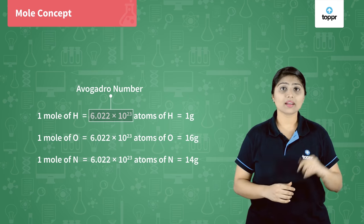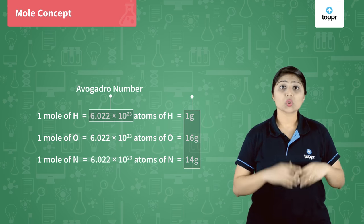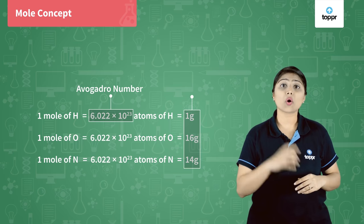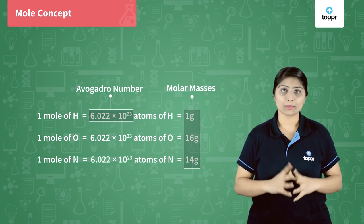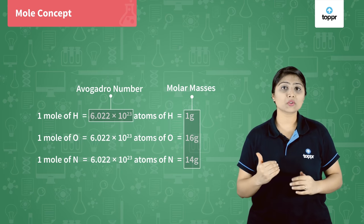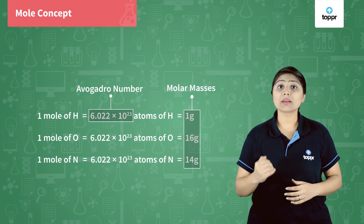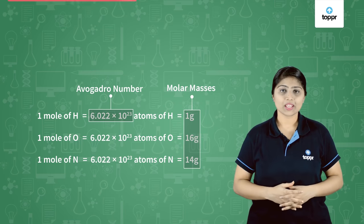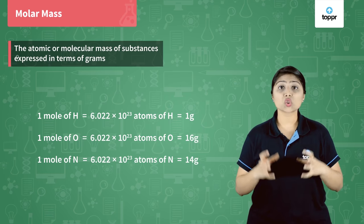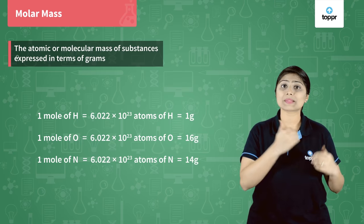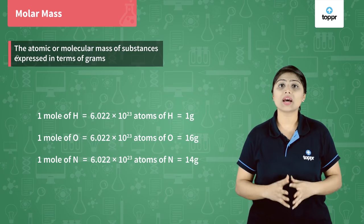When we check the atomic masses of the elements written in grams, these masses are called the molar masses — the mass of one mole of each element. So molar mass of hydrogen is one gram, molar mass of oxygen is 16 grams, and molar mass of nitrogen is 14 grams. We can define molar mass as the atomic mass or molecular mass of a substance expressed in terms of grams.